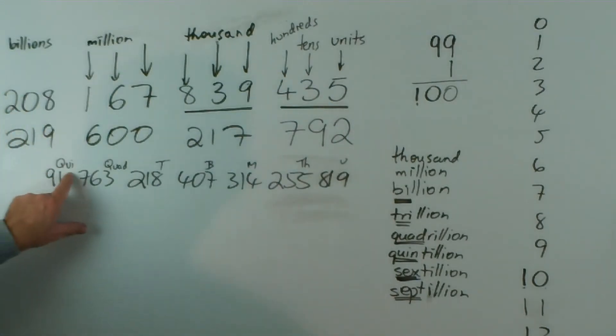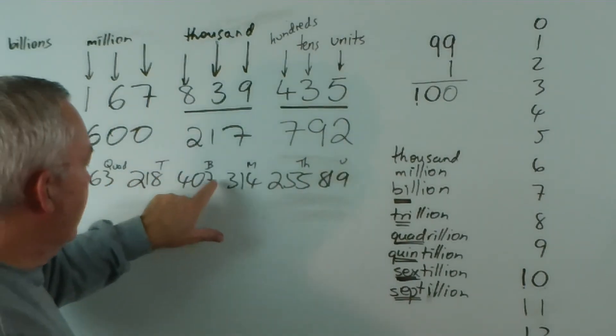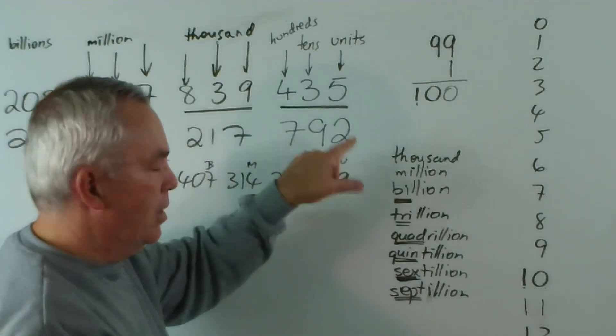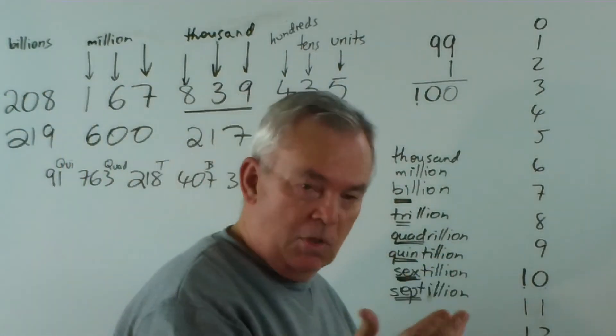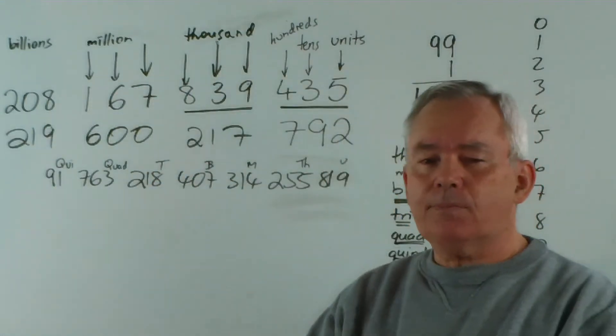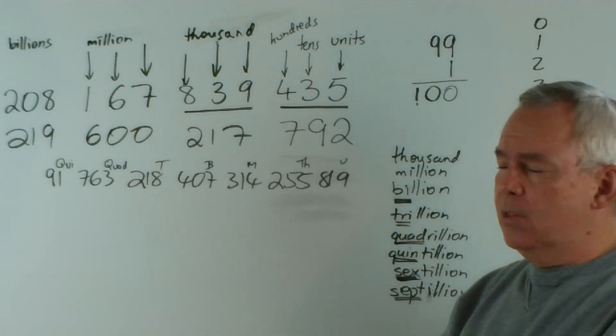So how would I read this large number? I'd read 91 quintillion, 763 quadrillion, 280 trillion, 407 billion, 314 million, 255 thousand, 819 units if you wish. But that, my friends, and particularly my young friends, is how we read really, really big numbers.